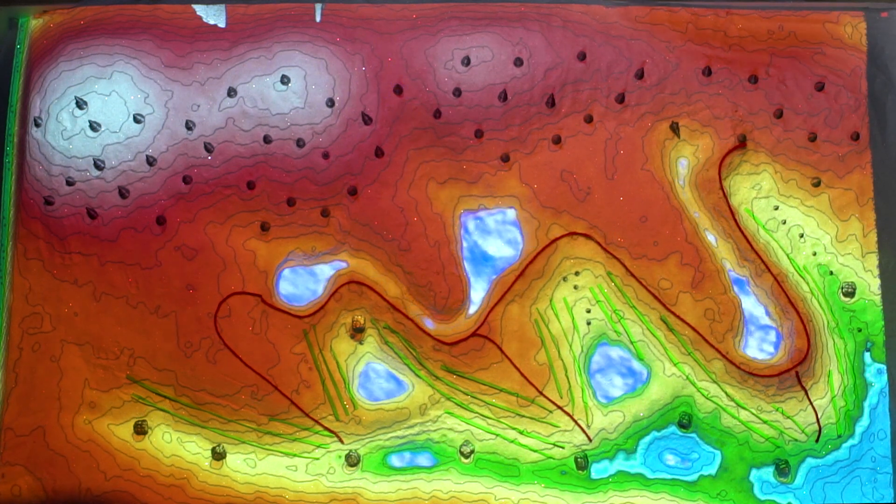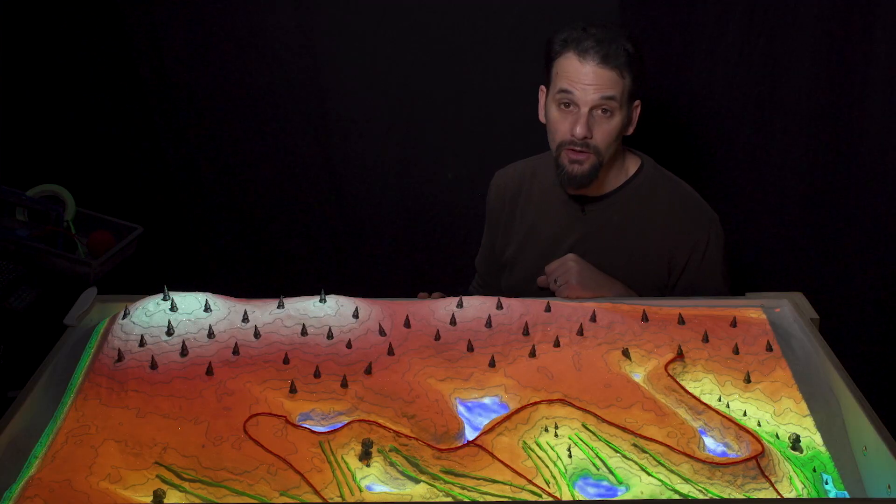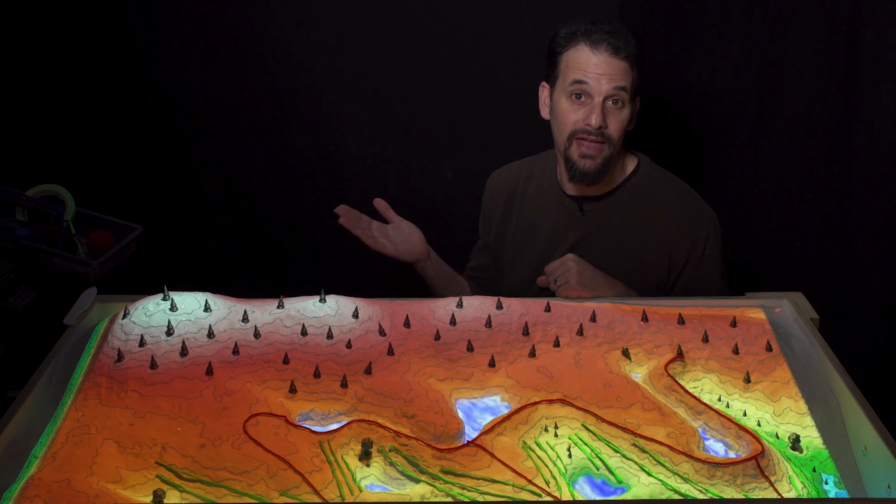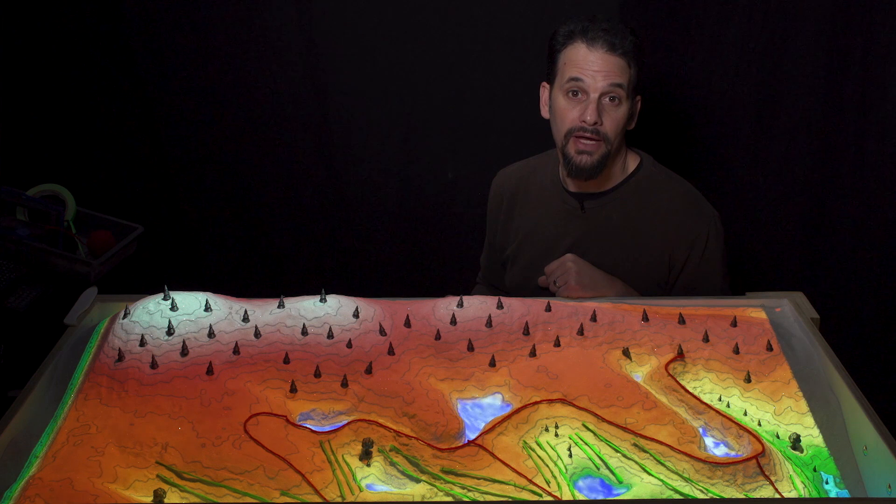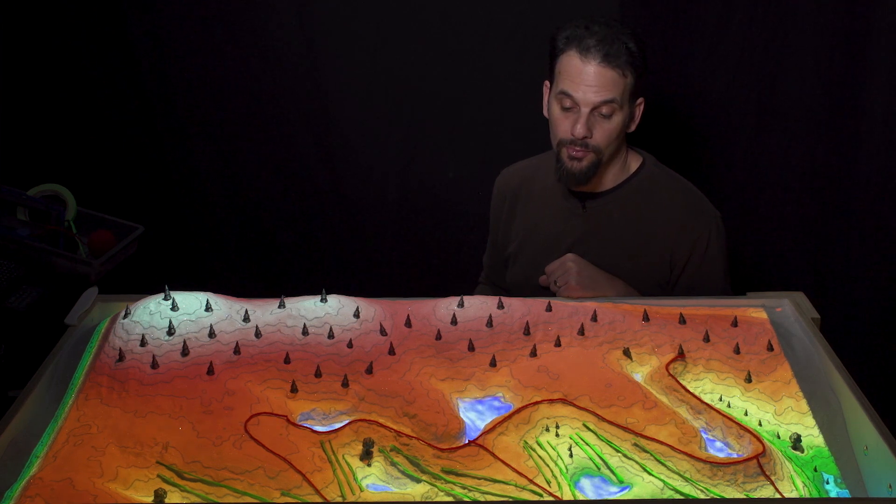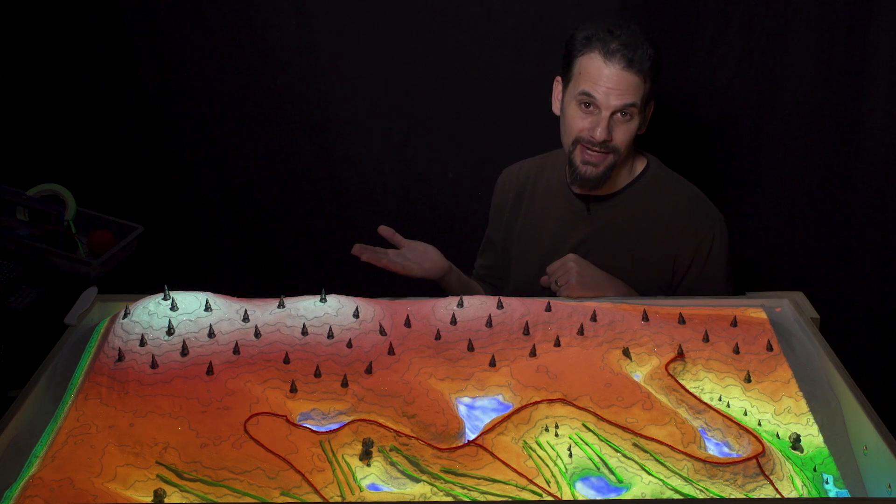So we have to be really careful about siting roads. A road going down a hill can become a stream and conveyance of water, rapidly moving it where you may not want it. And a road properly placed can become actually a beneficial conveyance of water.